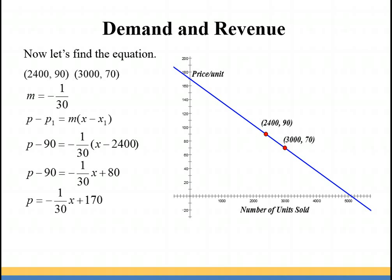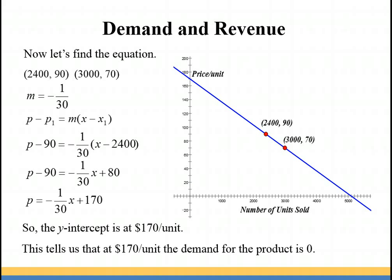Well now it's in slope-intercept form. You can see your slope of negative 1/30 and your y-intercept is 170. If the y-intercept is 170, that means that when the price is at $170 per unit, the demand for the product is zero.